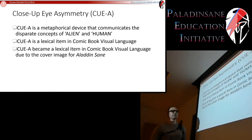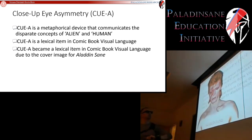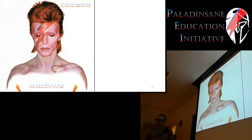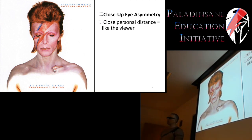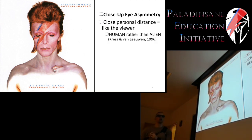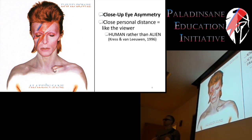We'll finish with the argument that this metaphorical device became part of our visual language due specifically to the cover image of Aladdin Sane. Close-up eye asymmetry has two parts. First, the close-up: close personal distance is a metaphor in visual language communicating that the person shown is like you, like the viewer — they are human rather than alien. So the close-up aspect communicates that Aladdin Sane is something like us.